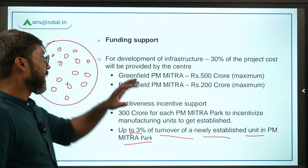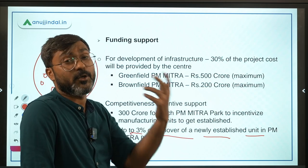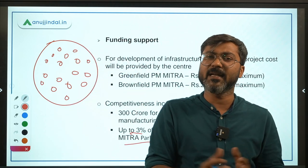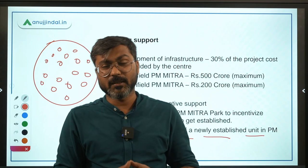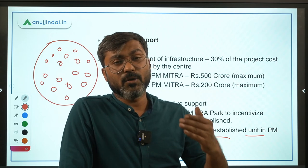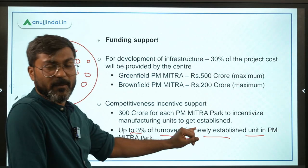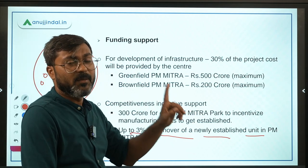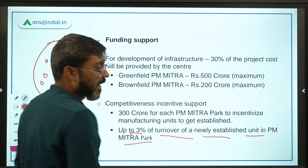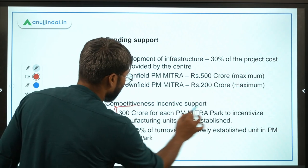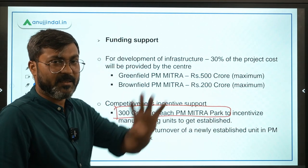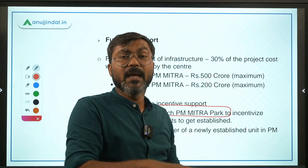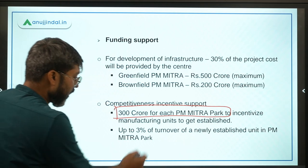Competitiveness incentive support will be provided to incentivize manufacturing units to get established in a PM MITRA park. The government will provide 300 crore to each PM MITRA park. This 300 crore will be distributed among the manufacturing units in the form of three percent of turnover to each newly established unit. The objective is to support them in the beginning when profits are low.